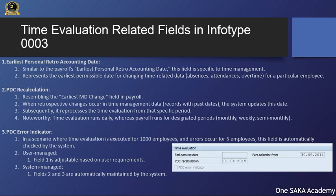Field 1 — Earliest Personal Retro Accounting Date: Similar to the payroll's earliest personal retro accounting date, this field is specific to time management. It represents the earliest permissible date for changing time-related data — absences, attendances, overtime — for a particular employee. Field 2 — PDC Recalculation: Resembling the earliest MD change field in payroll, when retrospective changes occur in time management data (records with past dates), the system updates this date and subsequently reprocesses the time evaluation from that specific period. Noteworthy: time evaluation runs daily, whereas payroll runs for designated periods — monthly, weekly, or semi-monthly.